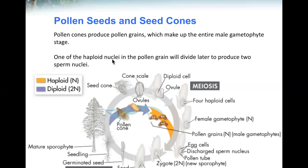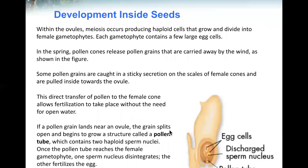One of the haploid nuclei in the pollen grain will divide later to produce two sperm nuclei. Within the ovules, meiosis occurs, producing haploid cells that grow and divide into female gametophytes. Each gametophyte contains a few large egg cells. In the spring, pollen cones release pollen grains carried away by the wind. Some pollen grains are caught in a sticky secretion on the scales of female cones and are pulled inside toward the ovule.